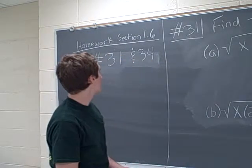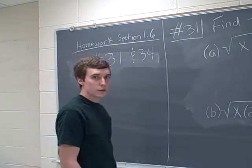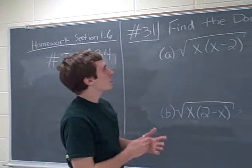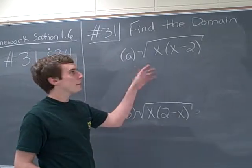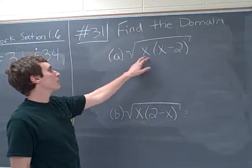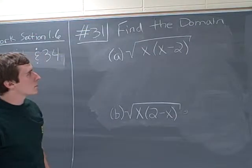Hi, today we're going to work a few more problems from section 1.6, numbers 31 and 34. Alright, for 31 it's kind of a big problem. It says find the domain and it gives us this really nasty looking expression, square root of x times x minus 2.